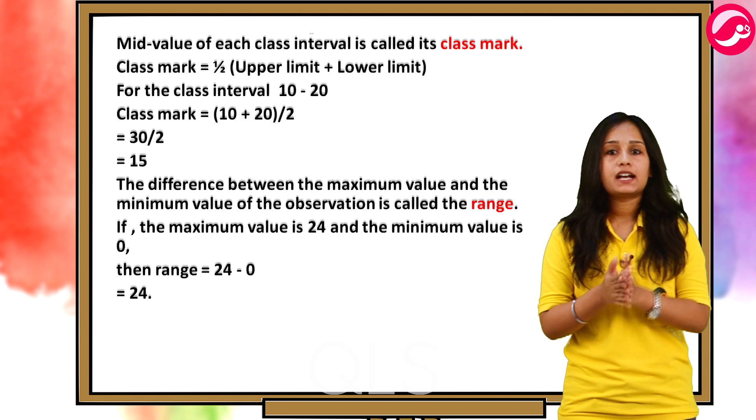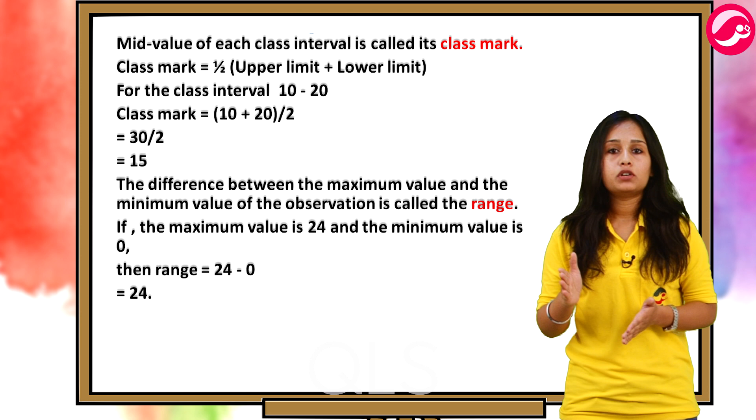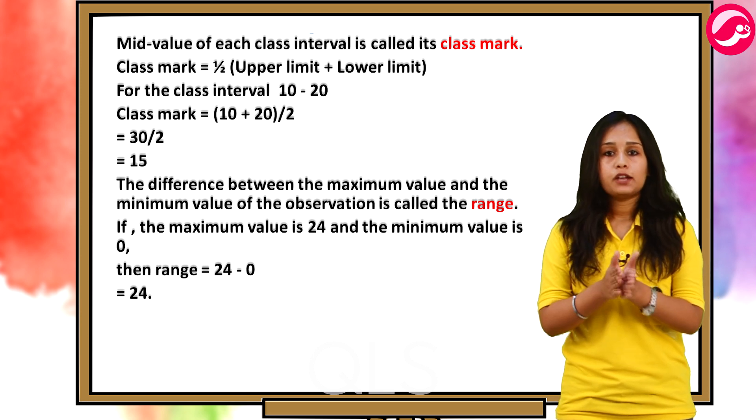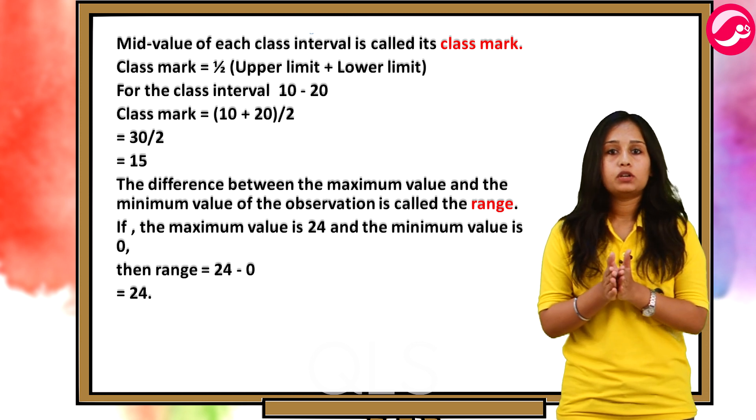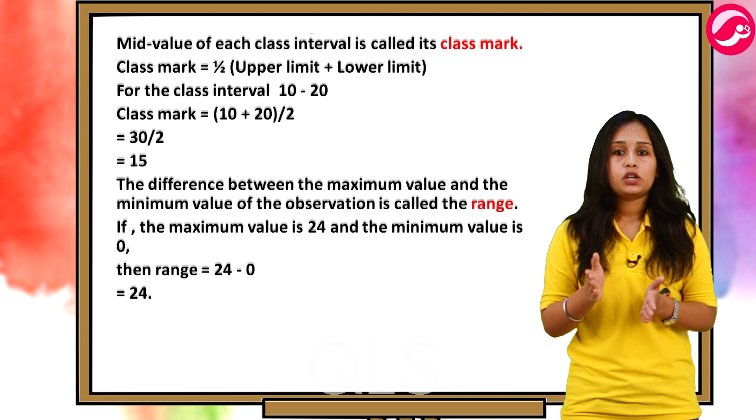Now, mid value of each class interval is called its class mark. So, class mark is equal to half of upper limit plus lower limit. For the class interval 10 to 20, class mark is equal to 10 plus 20 divided by 2 which is equal to 30 by 2 that is 15.